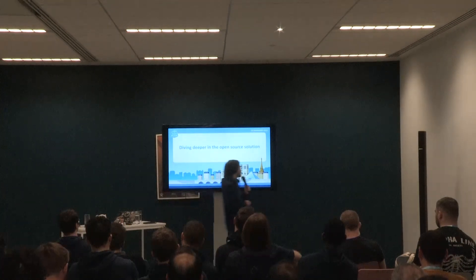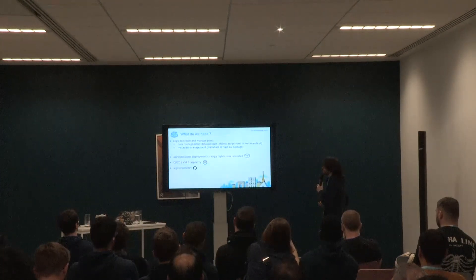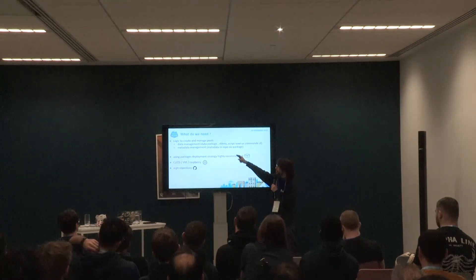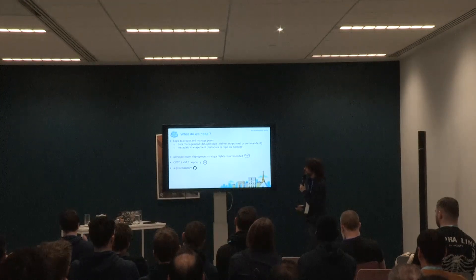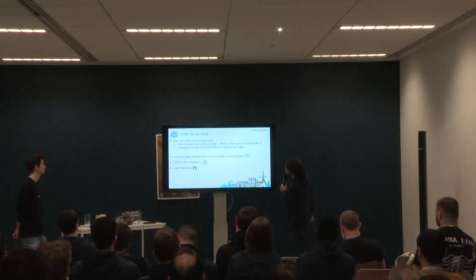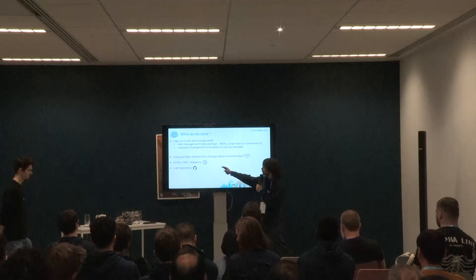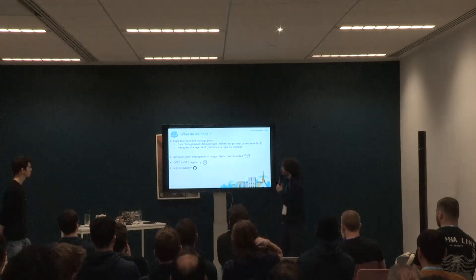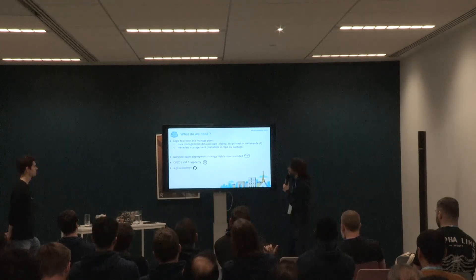To summarize what you need to get a pool of Scratch Orgs working: you need logic to create and manage your pool — data management and metadata management. It's highly recommended to use packaging because it's easier to manage deployments with packages. You need a server, for example a VM or a Raspberry Pi, where you can run all your logic and scripts. And you also need a Git repository.